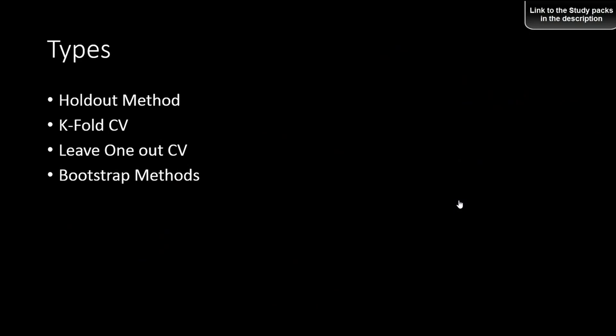There are many ways of doing cross-validation. The four most important ways are: the holdout method, k-fold cross-validation, leave-one-out cross-validation, and the bootstrap method.